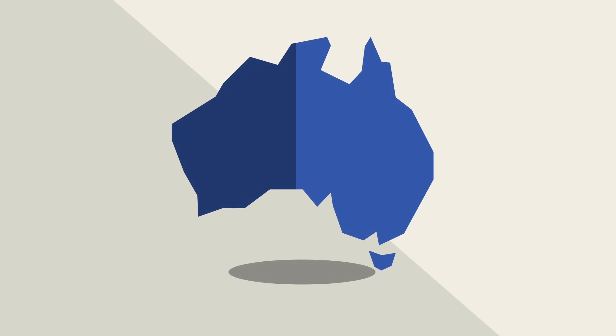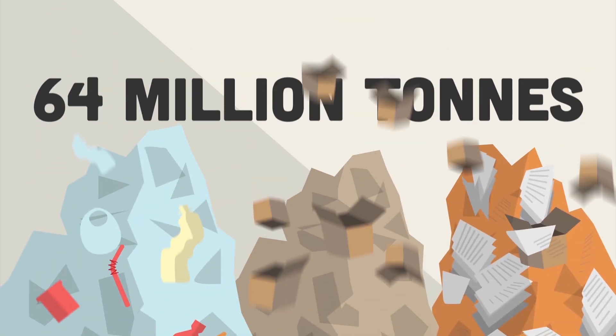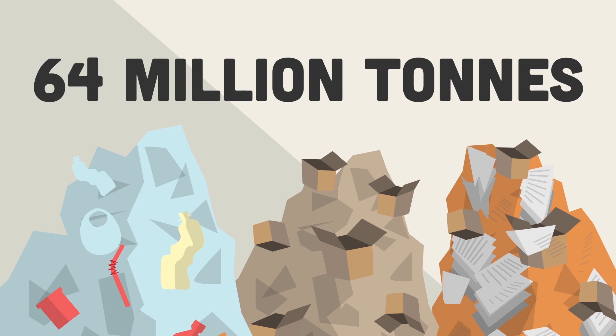Did you know, in 2014-15, Australia produced about 64 million tonnes of waste. That's about 2.7 tonnes of waste per person.